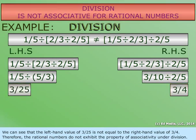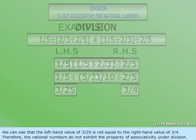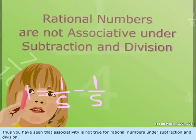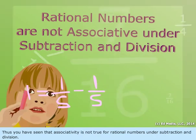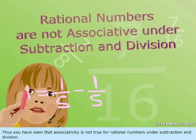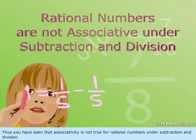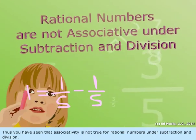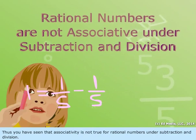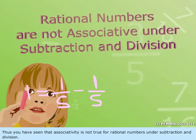Therefore, the rational numbers do not exhibit the property of associativity under division. Thus, you have seen that associativity is not true for rational numbers under subtraction and division.